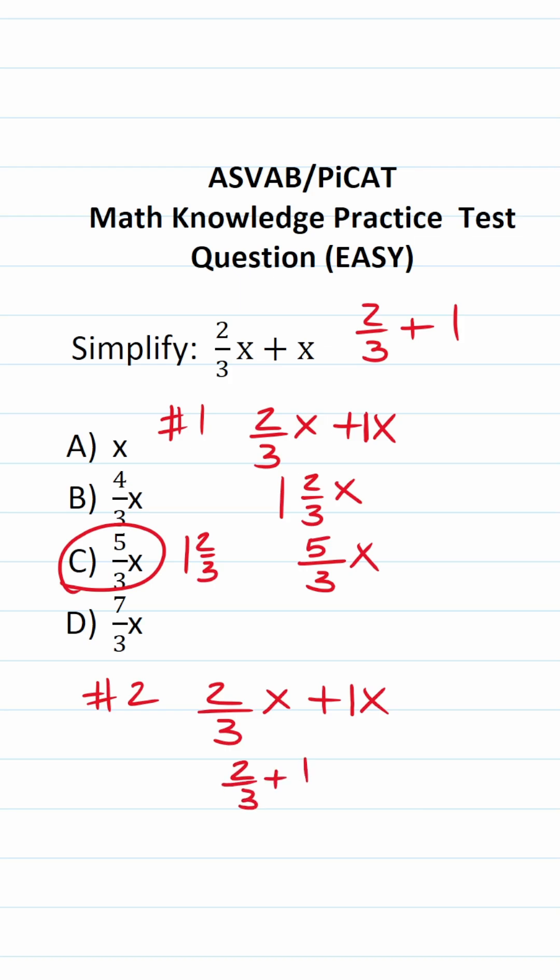In order to add fractions, they have to have a common or the same denominator. I can write one as a fraction by placing it over one. One divided by one is, in fact, one.